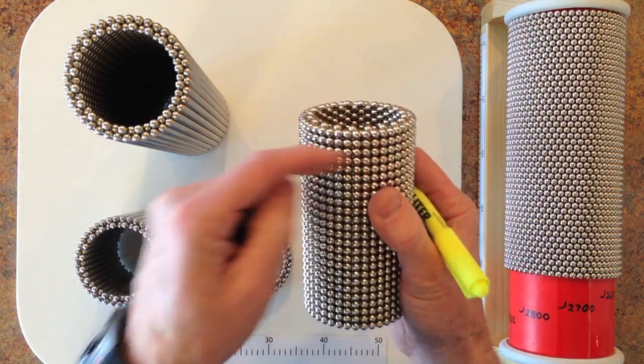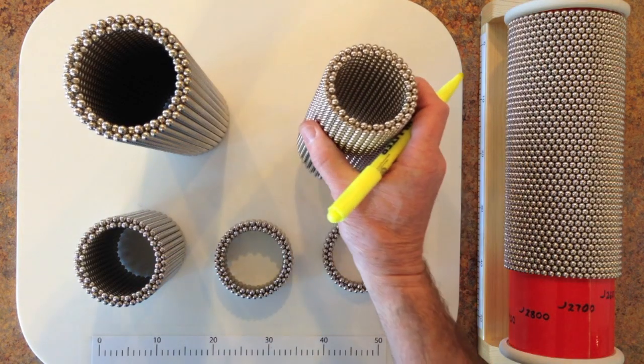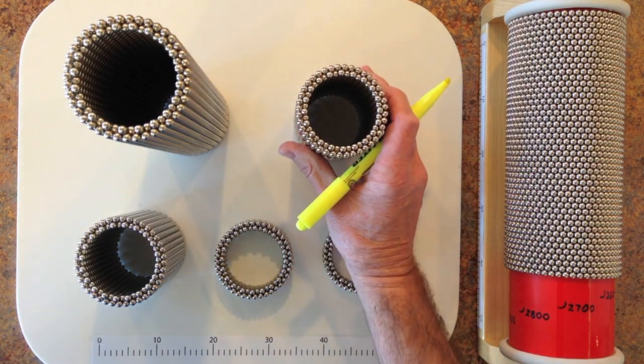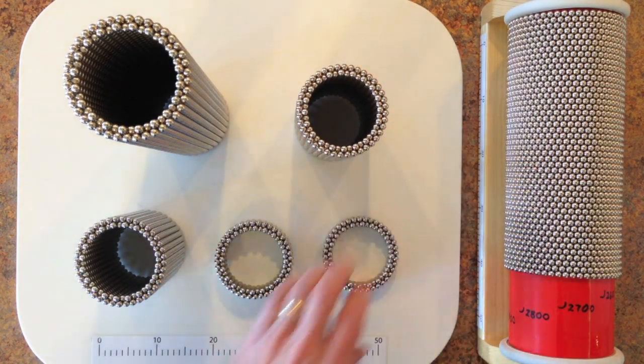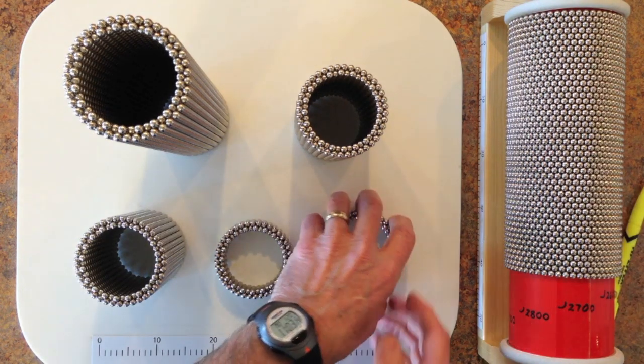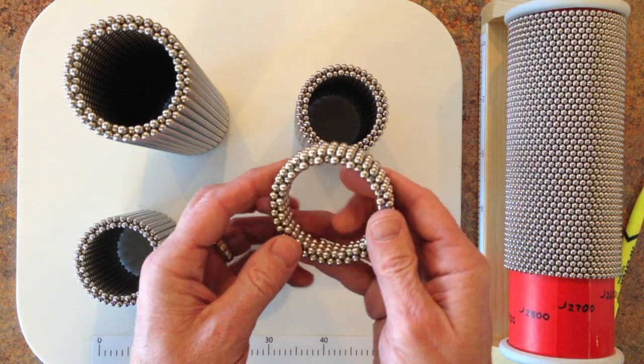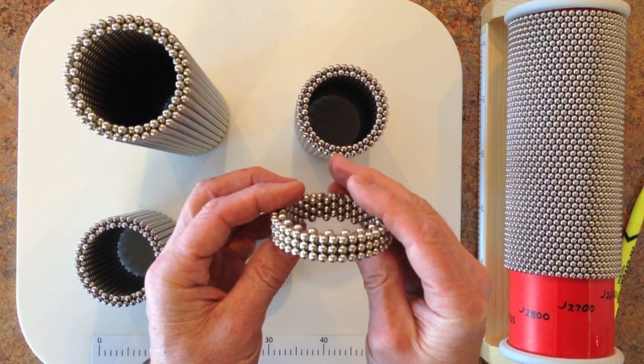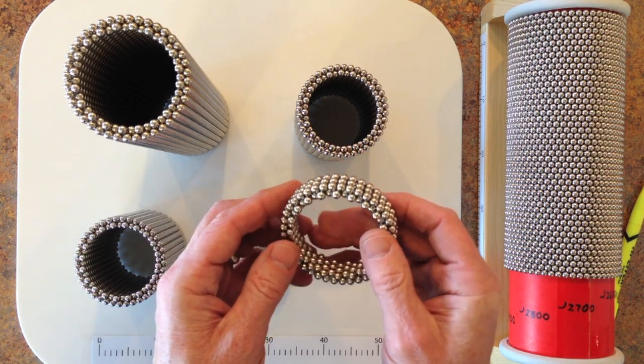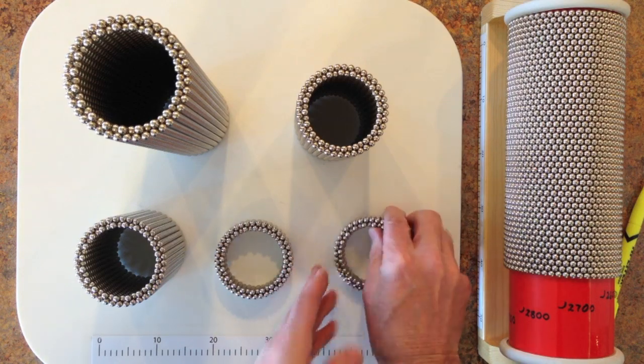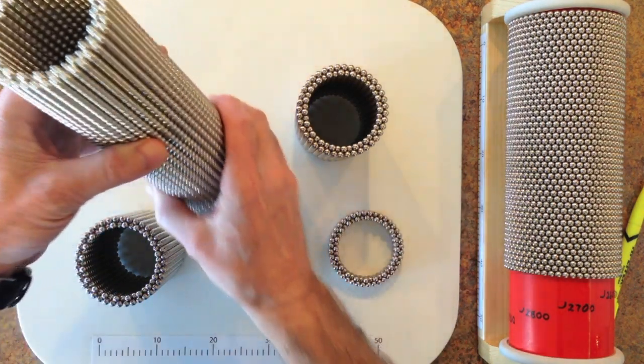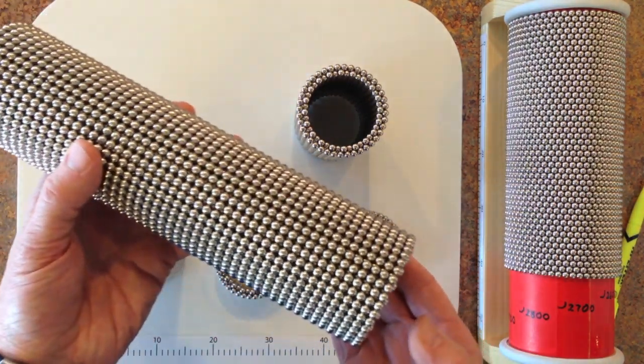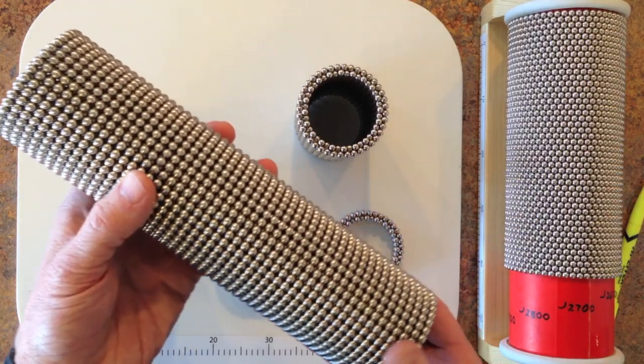And I will also build this 25 ring tube. So counting rings 2, 3, down to 25. And this has 2,000 magnets. This 3 ring tube is the smallest that you can build. Or at least the smallest that I have succeeded in building. But there's no limit to how large you can build it. This one has actually 50 rings in it.